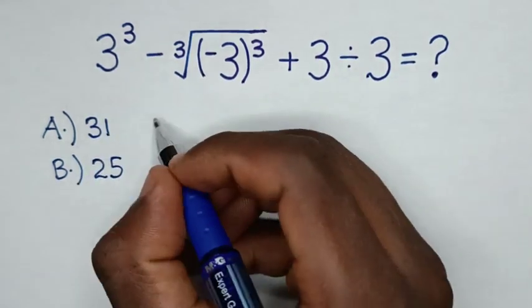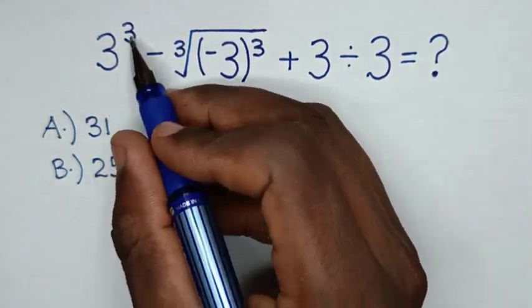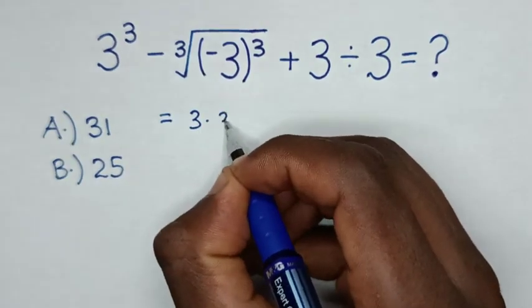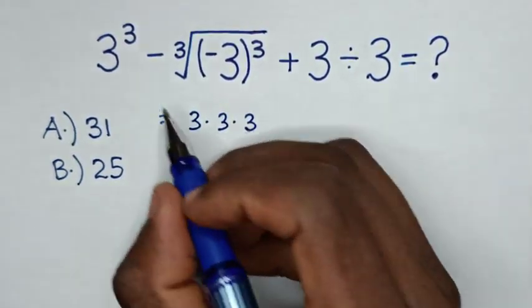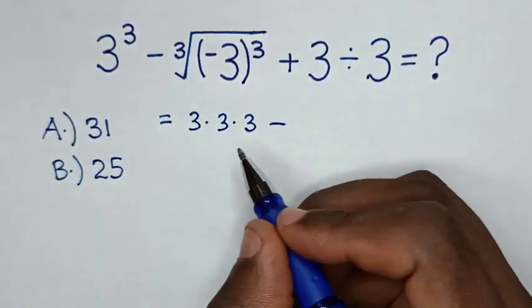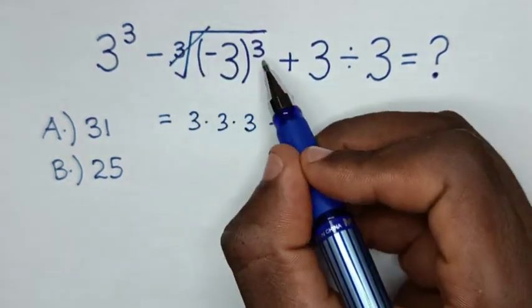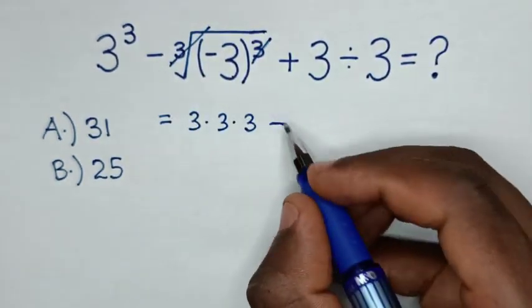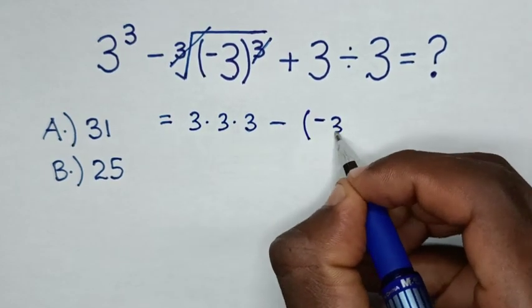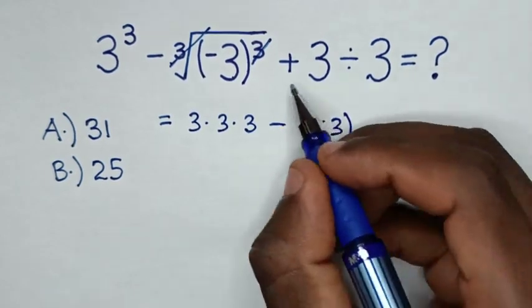So, this expression will be equal to 3 power 3 is same as 3 times 3 times 3. Then minus cube root will cancel with cube. Then, here it will be bracket negative 3 bracket then plus.